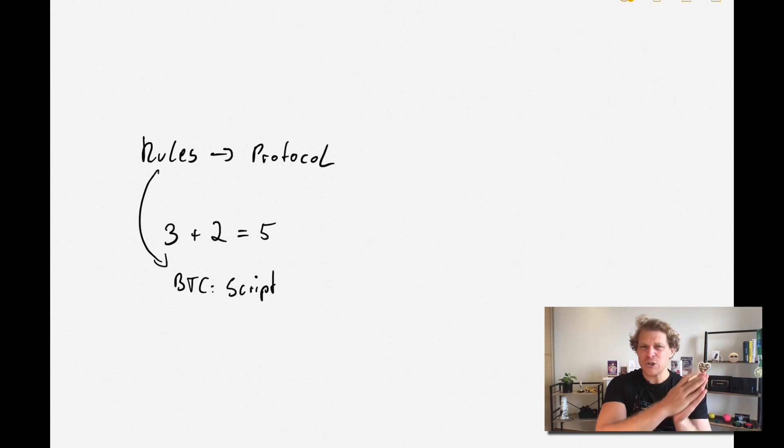And Script is super basic. They are called opcodes, and Bitcoin has less than 100 of those. You can look them up - I'll link it down below - but you can look those up and it's really basic.